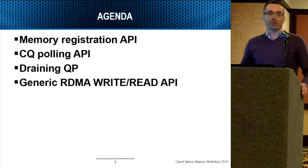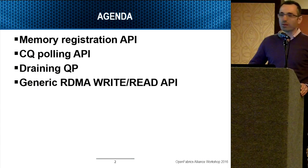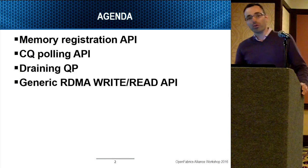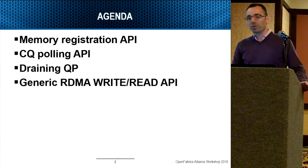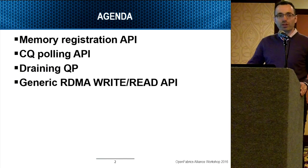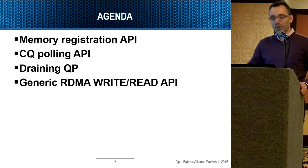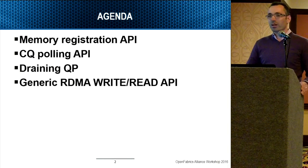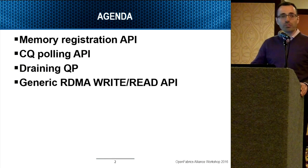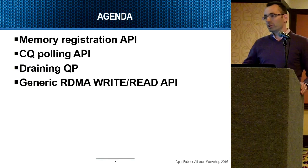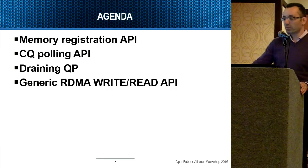We will talk about four different API changes which were introduced last year. We will talk about the memory registration API, the CQ polling API, and draining QP. I will also touch briefly on a new API which was submitted but not accepted yet — it's a general RDMA read/write. Almost all these APIs were presented in different stages: first as a concept, and after that external and internal developers wrote the code itself.